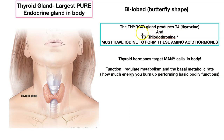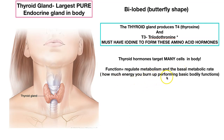T3 is actually the active form of the hormone. T4 will be converted into T3, and T3 is the active form. Thyroid hormones target many, many cells in the body. Their function is to regulate metabolism and basal metabolic rate — basically how much energy you burn up performing basic bodily functions.